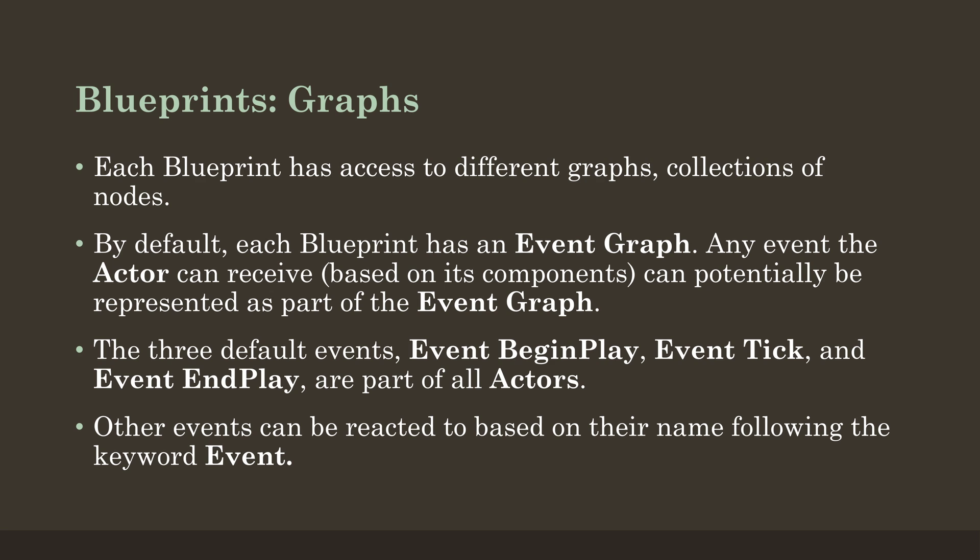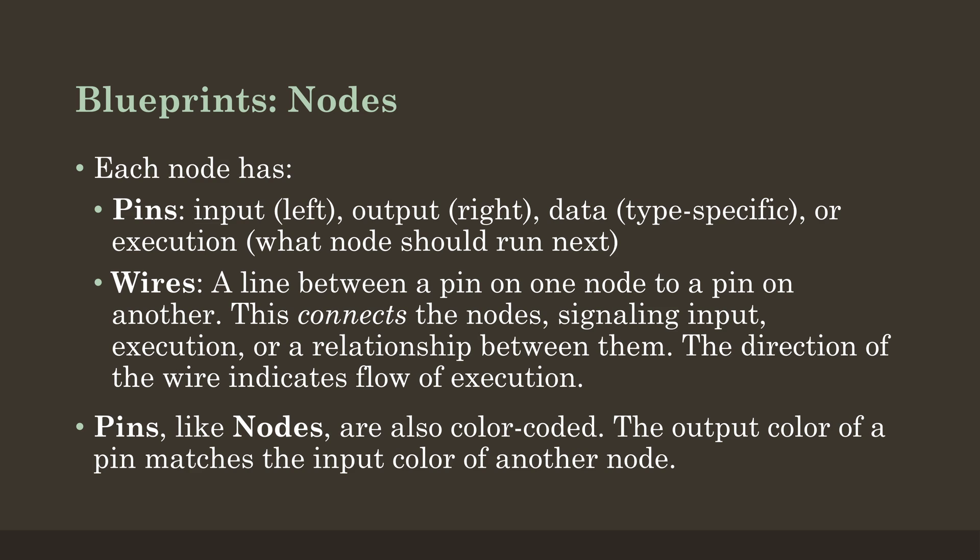Moving into nodes: nodes have two things — pins and wires. Pins are broken down into left and right sides. The left side are the inputs, the right side are the outputs. On either the input or output are two other types of pins: data and execution. We may have information flowing from one node to the next, where the output of one is the input of another. Depending on what we're working with, we may care about their data and their type, and we may also be connecting various nodes together as execution — what node should run next and in which order.